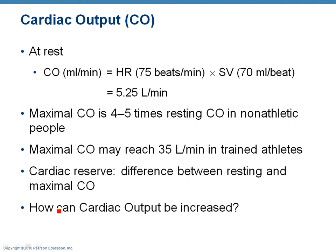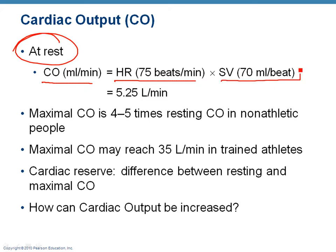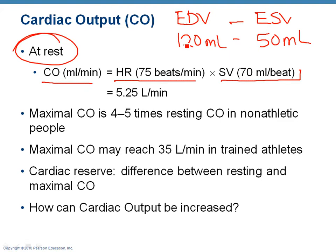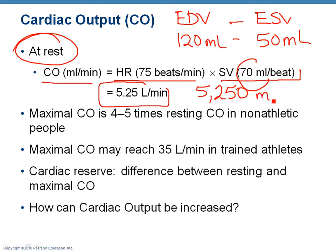Let's look at a pretty simple calculation. At rest, in an average adult, heart rate is about 75 beats per minute. A typical end diastolic volume in an adult is about 120 mL, minus your end systolic volume, which is typically about 50 mL left over. 120 minus 50 gives you 70 mL per beat. So if you have a heart rate of 75 beats per minute and you are pumping 70 mL of blood out of your ventricles per beat, that gives you — multiply 75 times 70 — which comes out to 5,250 milliliters.